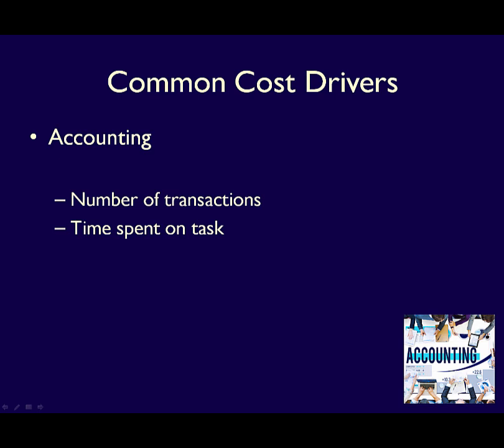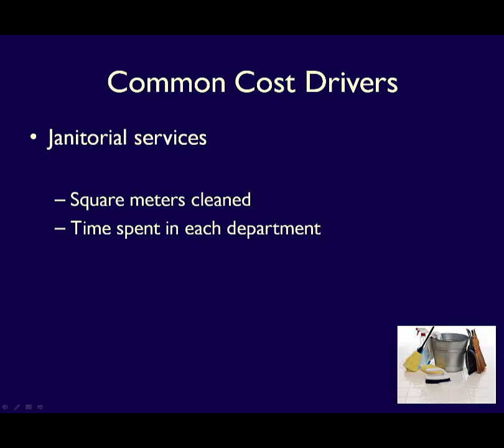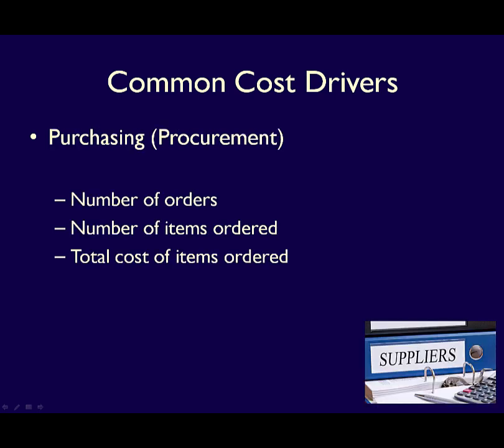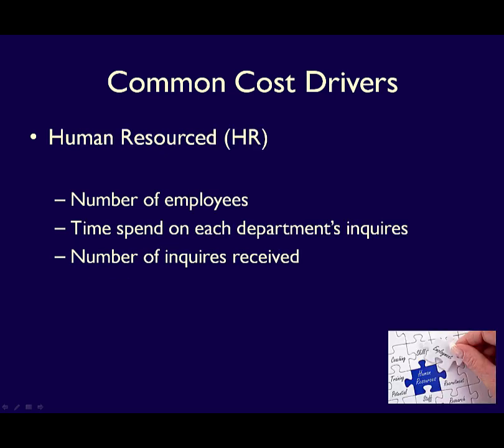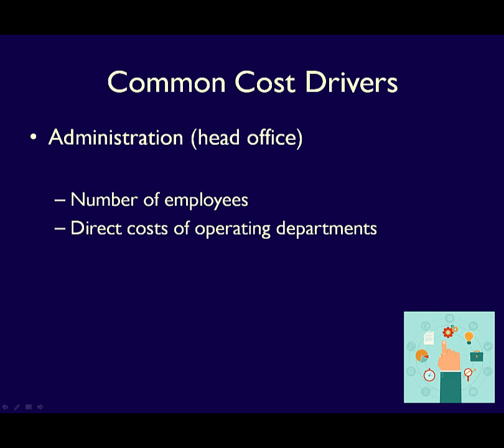Here are some common service departments and possible cost drivers. Accounting might use the number of transactions processed or time spent. Janitorial services could use square meters cleaned or time spent — useful when some areas take longer despite being smaller. Purchasing can use number of orders received, number of items ordered, or total cost of items ordered. Human Resources could use number of employees, time spent, or number of inquiries. Administration could use number of employees or the direct costs of operating departments.